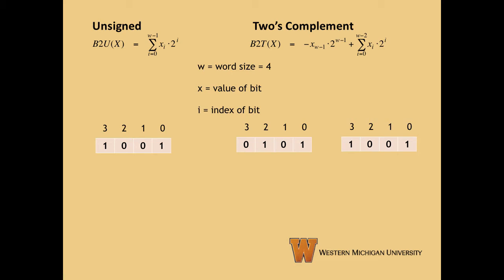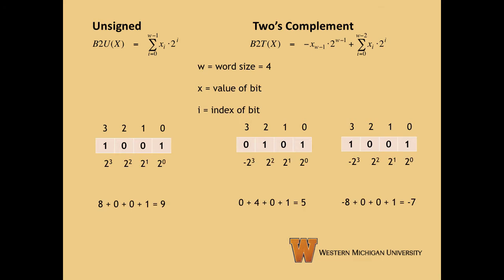Let's label the indices of the bits for each example. We'll start with the least significant bit at index zero and the most significant bit at index w minus one. For unsigned integers, we multiply the bit value by 2 to the power of the index and sum the results. For two's complement, we just change the sign of the most significant bit times 2 to the power of the most significant bit index. Multiplying and summing gives us the results for all of the examples.